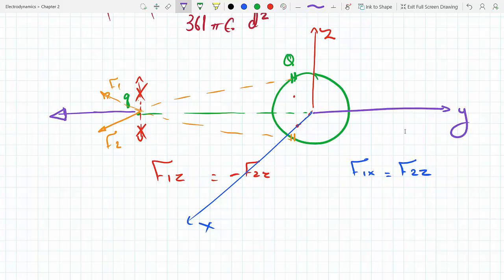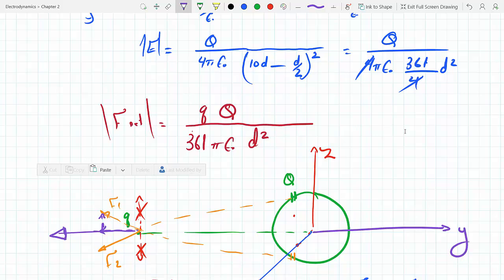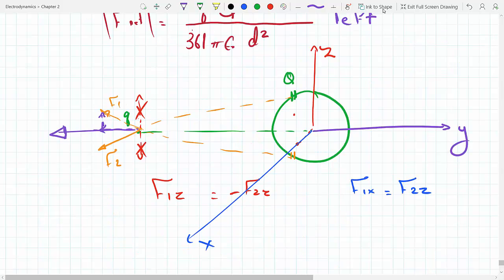All these components will add up and they will add up to the left, because if you draw the component diagram for each one of these forces, this points left and F2 points left as well. So that means this force will point left—left of the page. That is the direction of the force.